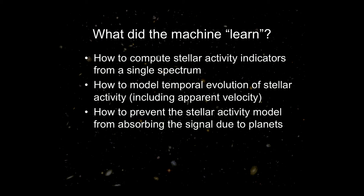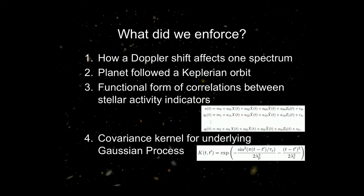There are many detection efficiency curves here. The gray curve shows what happens with the traditional method — it doesn't perform well. The green model shows another approach that used a similar model but picked activity indicators based on astronomical intuition rather than machine learning. Then we tried several different models — different curves showing different approaches — and several do quite well. We studied which coefficients in a flexible model need to be active for good performance. We basically always need these five indicators in any good model, and adding one more may or may not help. In this case, what did the machine learn? We learned how to measure stellar activity indicators from a single spectrum, then how to model the temporal evolution of those indicators jointly with the apparent radial velocity, so that we could distinguish a planetary signal from a stellar activity signal.